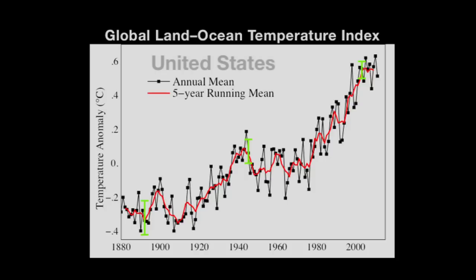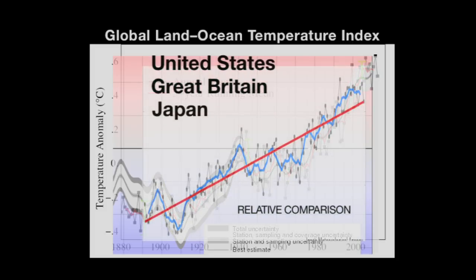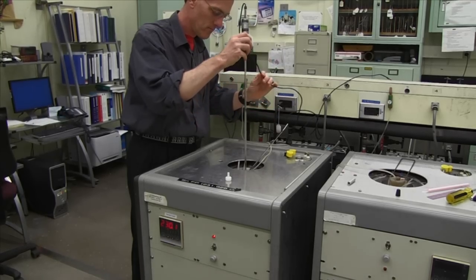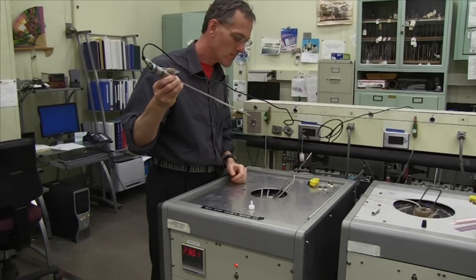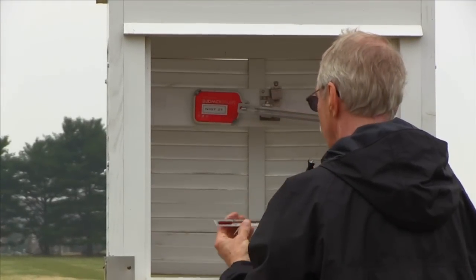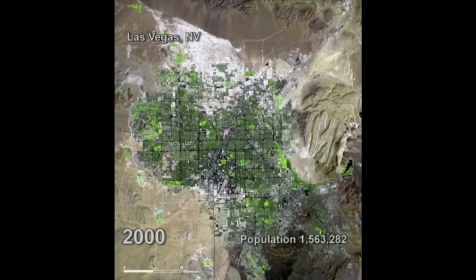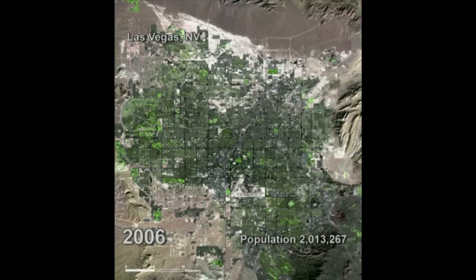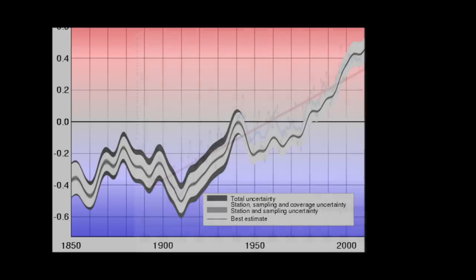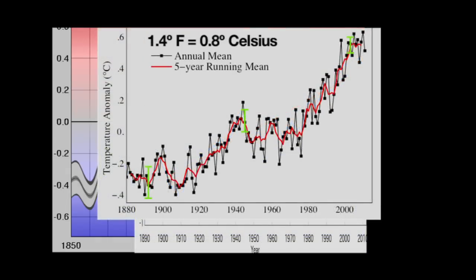Different research groups, including NASA's Goddard Institute for Space Studies, Great Britain's Hadley Center, and the Japanese Meteorological Agency, have used these raw measurements to produce records of long-term surface temperature change. Research groups work carefully to make sure the data aren't skewed by changes in instruments or by other factors that affect local temperature, such as additional heat from the gradual growth of cities. These analyses all show that Earth's average surface temperature has increased by more than 1.4 degrees Fahrenheit over the past 100 years, with much of this increase taking place over the past 35 years.